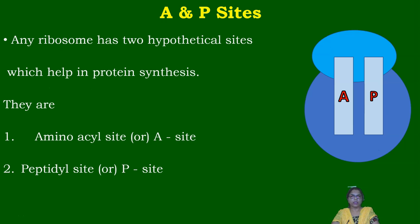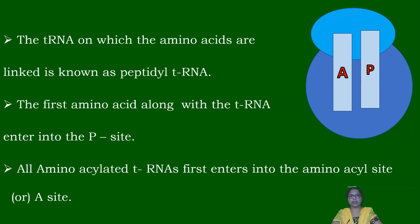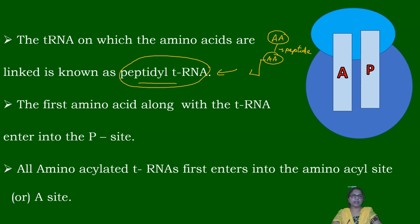Any ribosome contains two hypothetical sites: the A site (aminoacyl site) and the P site (peptidyl site). The tRNA carrying linked amino acids is called peptidyl tRNA. For example, if a tRNA carries two amino acids joined by a peptide bond, that tRNA is called peptidyl tRNA and it enters the P site.